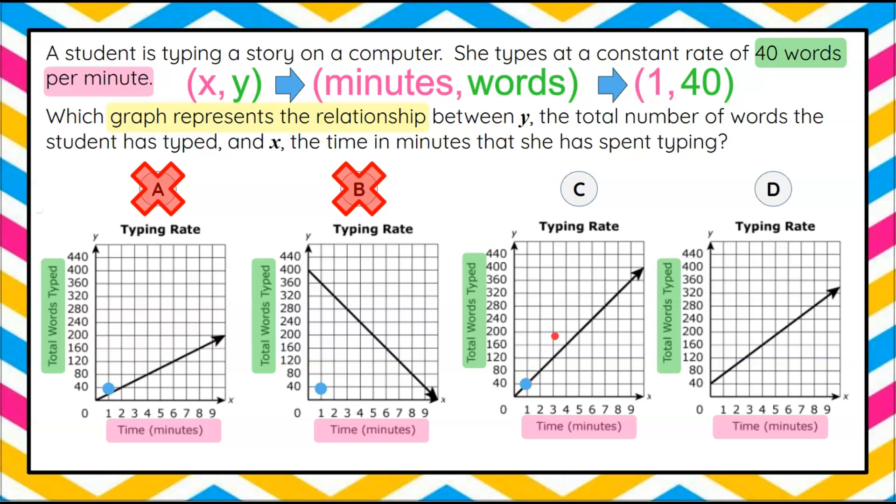1, 40 is right here. And that's actually below the line. So we can eliminate that and understand that graph C represents this real world relationship.